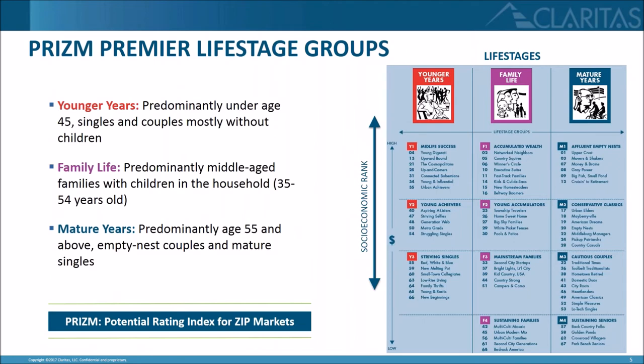They're organized across based on their age and presence of children in the household. These three core groupings are: younger years, which are mostly under 45, singles or couples primarily without kids; family life, which are households with kids, ages 35 to 54; and finally, mature years, which are generally households 55 plus that are most likely empty nesters or mature singles. Throughout part two of our training, we're going to be speaking more about these customer groups using life stages, as they offer a simple and efficient way of defining different customer targets.